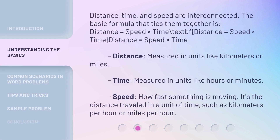Distance, time, and speed are interconnected. The basic formula that ties them together is: Distance equals speed times time. Distance is measured in units like kilometers or miles. Time is measured in units like hours or minutes. Speed describes how fast something is moving — the distance traveled in a unit of time, such as kilometers per hour or miles per hour.